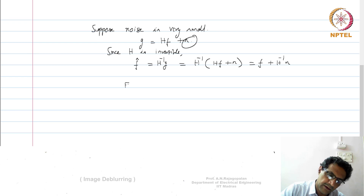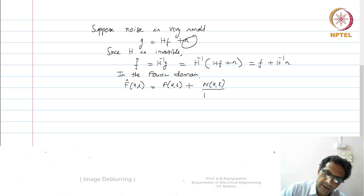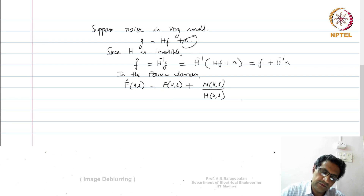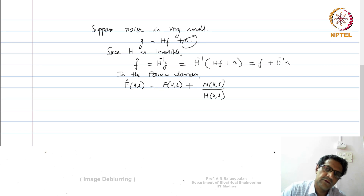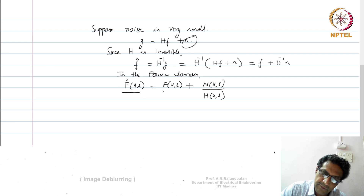In the Fourier domain, we can write equivalently that F-hat(KL) equals F(KL) plus N(KL) divided by H(KL), where H(KL) is the Fourier transform of the impulse response. This is called inverse filtering, because all we have done is multiplied G with the inverse of H — H-inverse is what you need to undo the effect of blur, so it is called the pure inverse filter. The estimated F is away from the true F by N(KL)/H(KL).